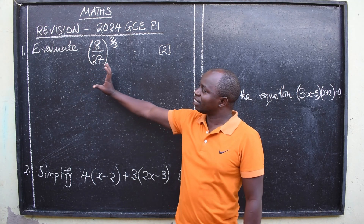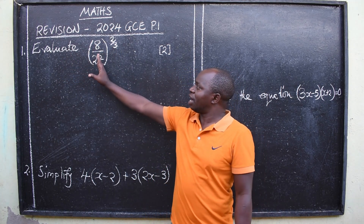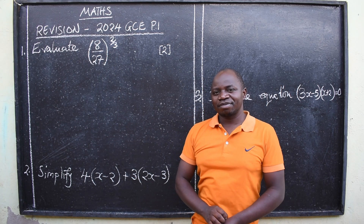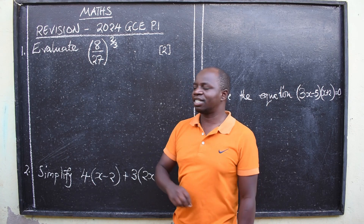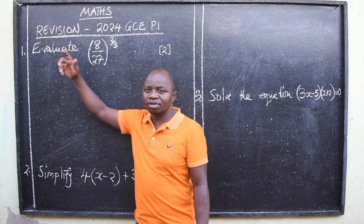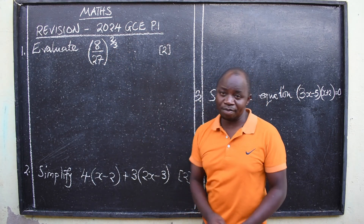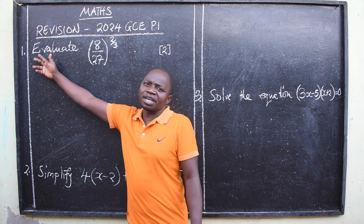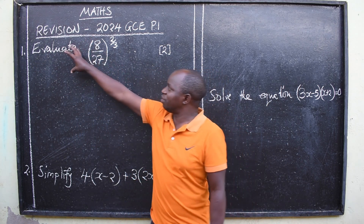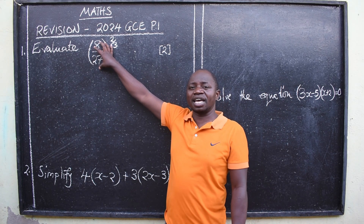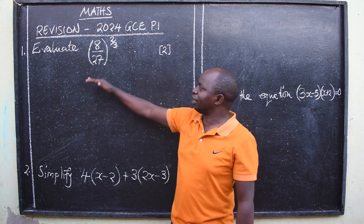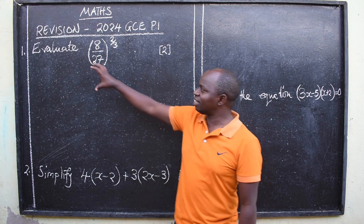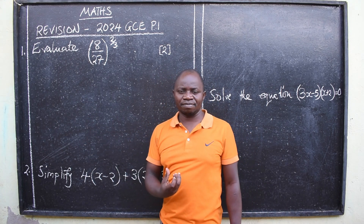The first question says: evaluate 8 over 27 raised to the power 2 over 3. In Paper 1, you must understand the stem of the question, the topic from which the question is coming from, and the number of marks being allocated. In this case, the stem says 'evaluate,' meaning you should find the exact value of this question without using a calculator, and you should do so by showing your method. Space will be given to you to do the calculations because that method will attract marks.